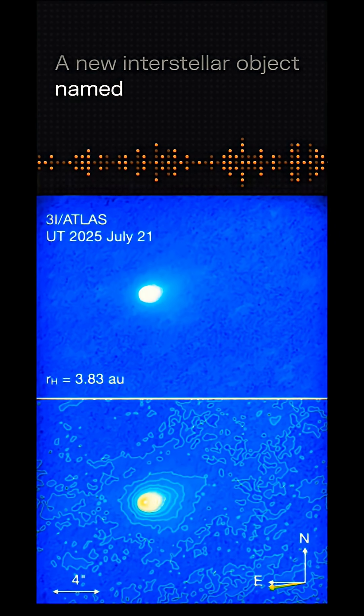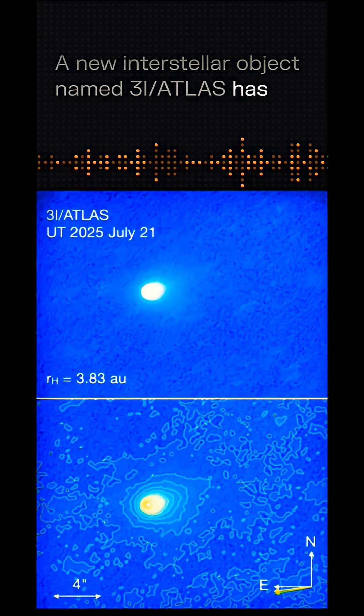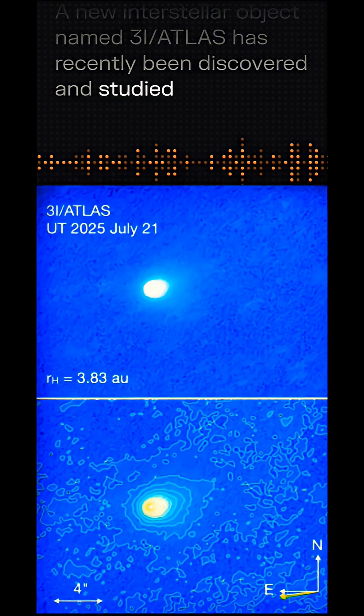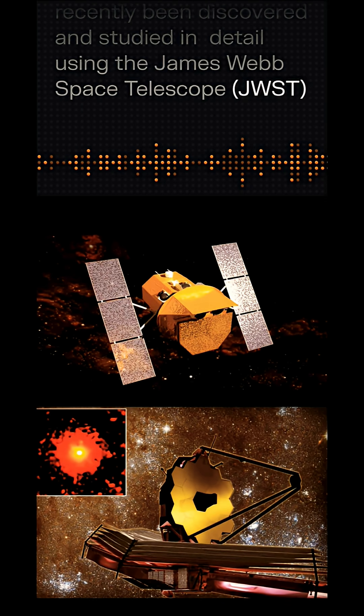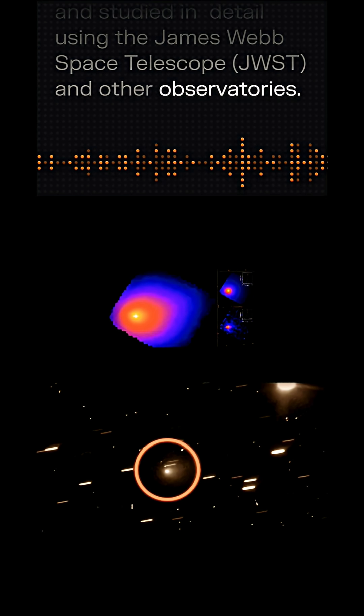A new interstellar object named 3I Atlas has recently been discovered and studied in detail using the James Webb Space Telescope (JWST) and other observatories.